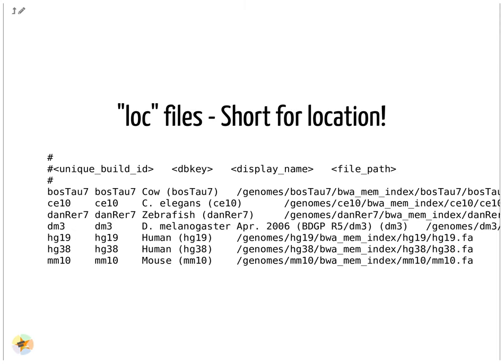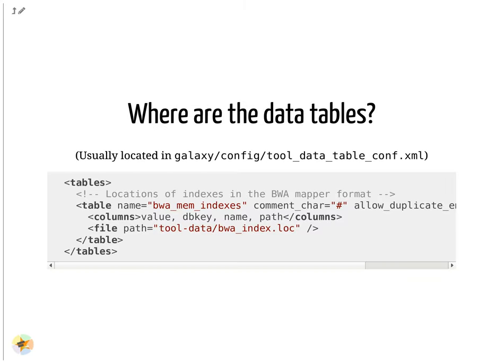Here is an example lock file. They list all of the indexes of a specific type. Some of these indexes will be tool-specific like this one, and some will be more general like a list of genomes. This file is updated by the data manager. The tool data table config file lists table names and their associated lock file. Additionally, it defines the meaning of each column in the lock file.